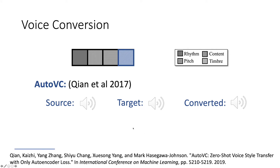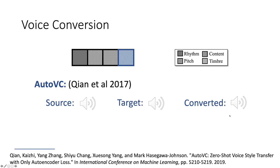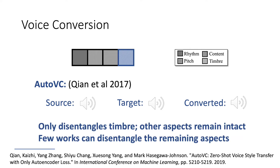Here is a voice conversion example produced by a benchmark algorithm AutoVC. Here is the source speech, followed by the target speech, and then the converted speech. As you can hear, it does a fairly decent job of converting timbre. However, you will probably notice that only the timbre aspect is changed, and the rest of the aspects are exactly the same as the source speech.